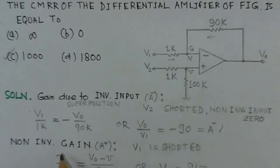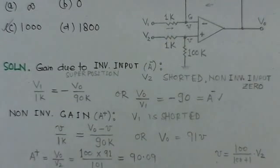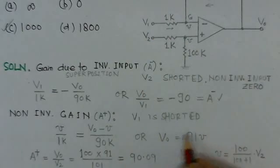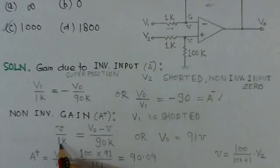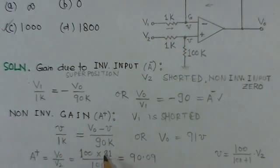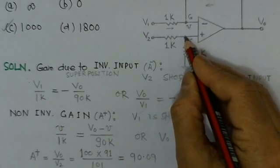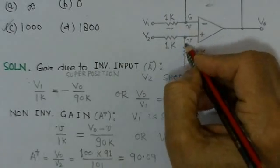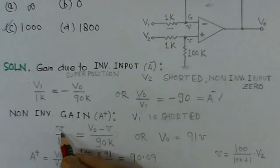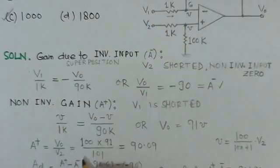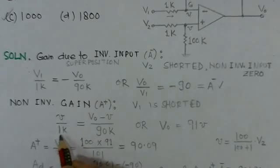To find the non-inverting gain, which is considered positive, we short the inverting input V1 and again write the nodal equation at node G. The voltage at this point is considered to be V, and due to the concept of virtual ground, the voltage at the inverting terminal is also V. We can write V over 1kΩ for the current flowing through that branch.